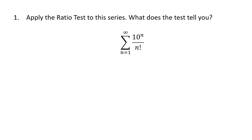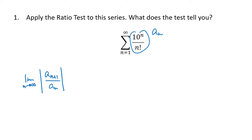In this problem we're going to apply the ratio test, which means if we call this term of our series a sub n, the ratio test tells us to consider the limit as n goes to infinity of the absolute value of a_{n+1} divided by a_n. The idea is that we want to understand to what extent the series has some geometric type properties — we're looking at that ratio to see if it tends to something as n goes to infinity.